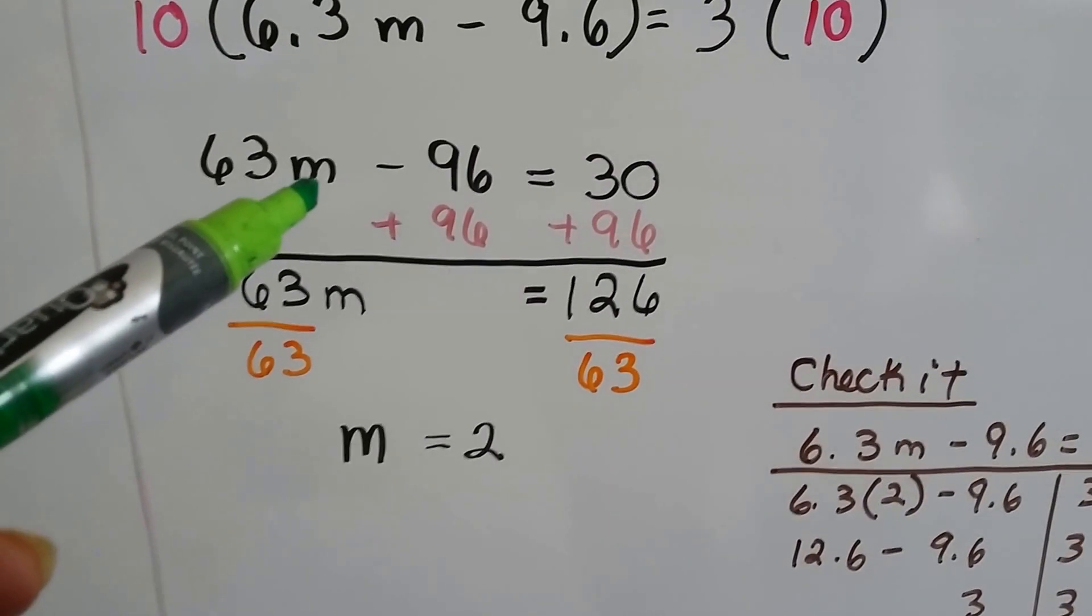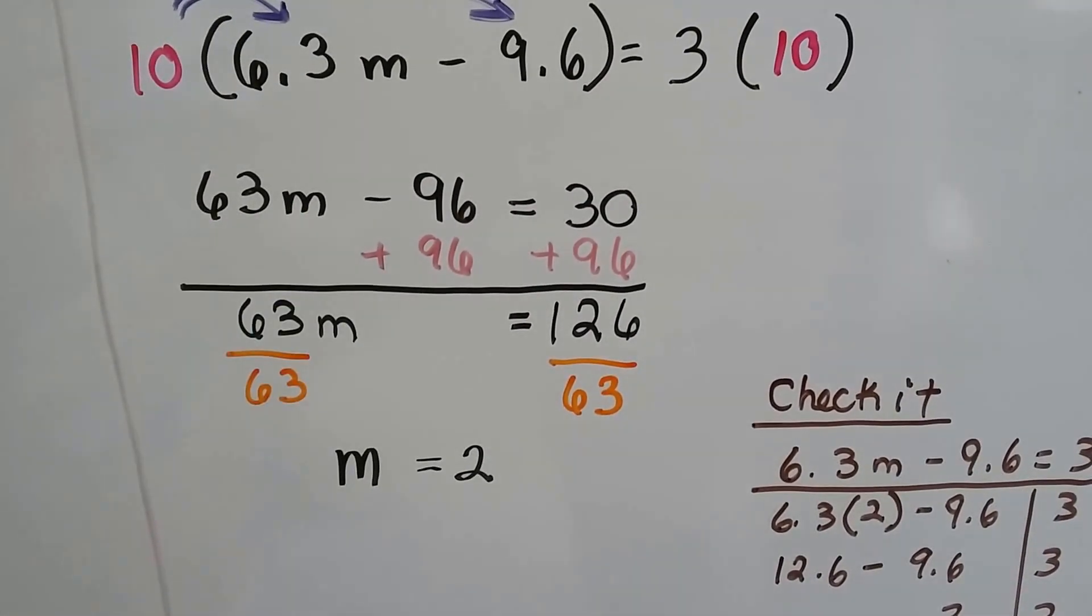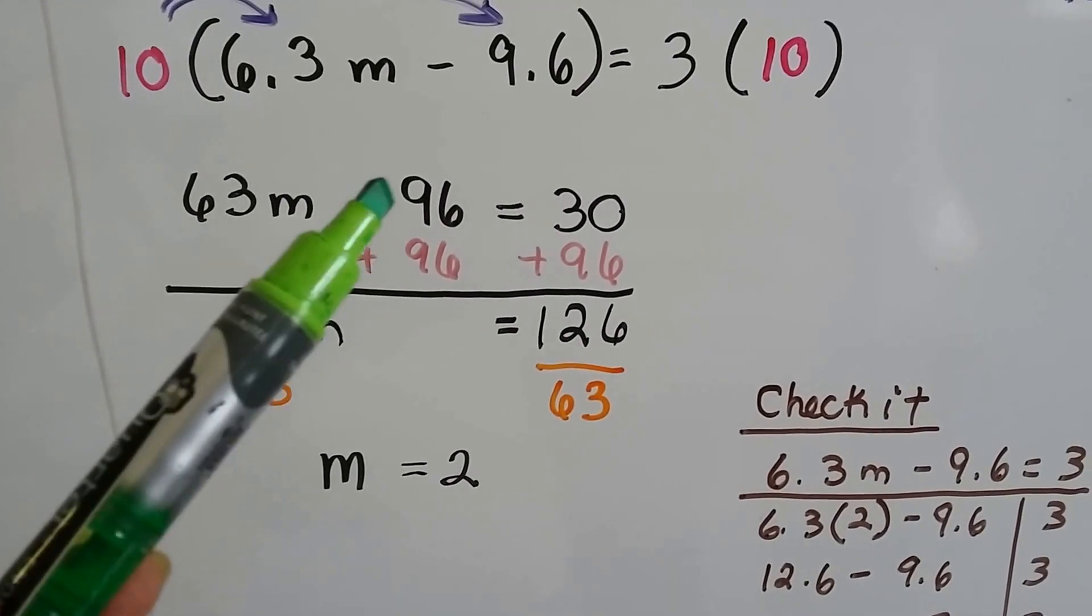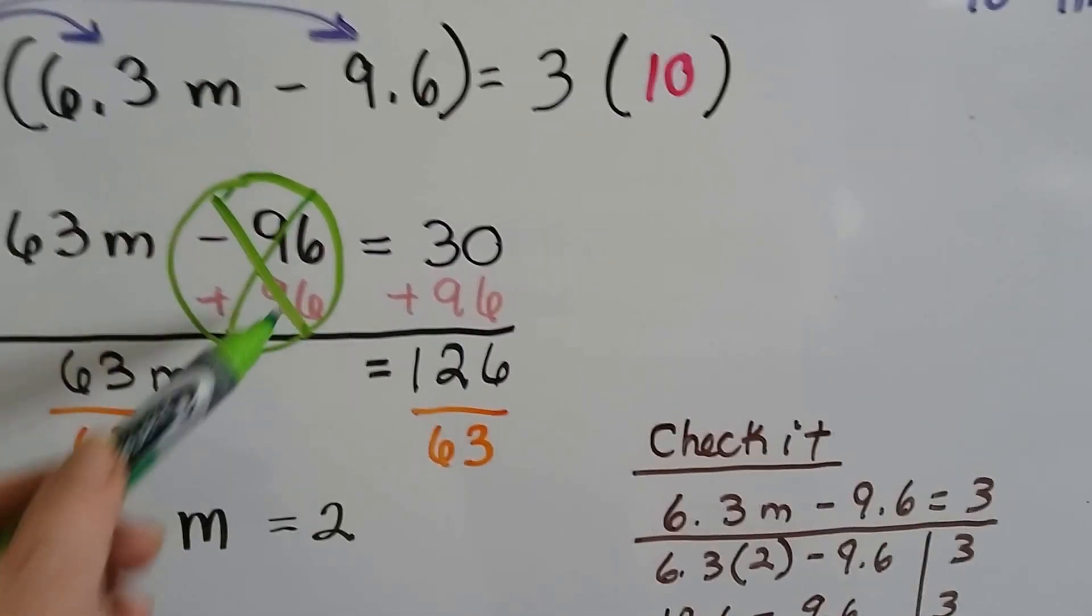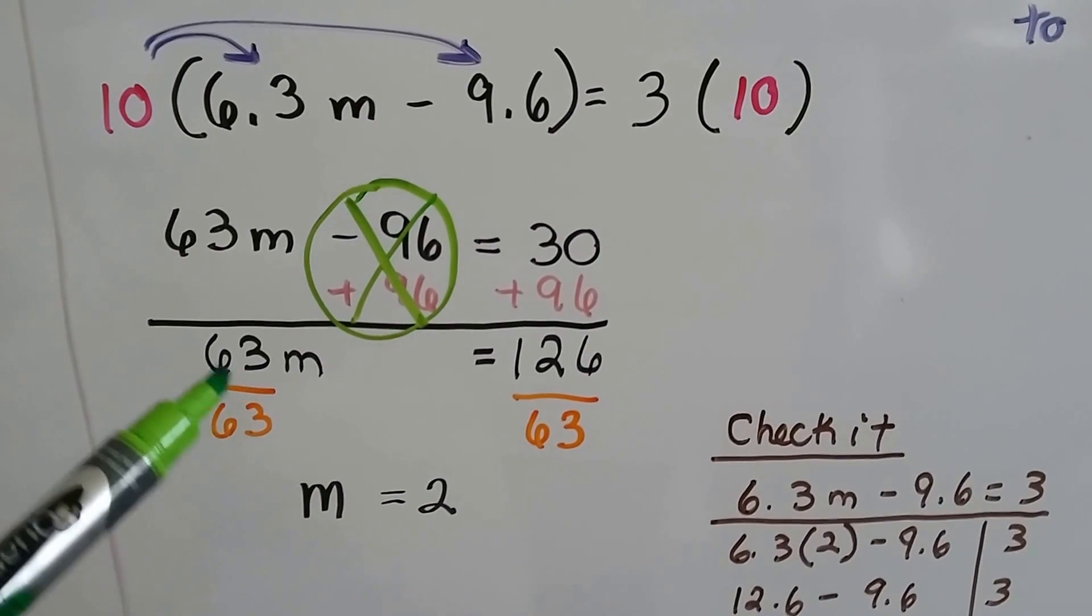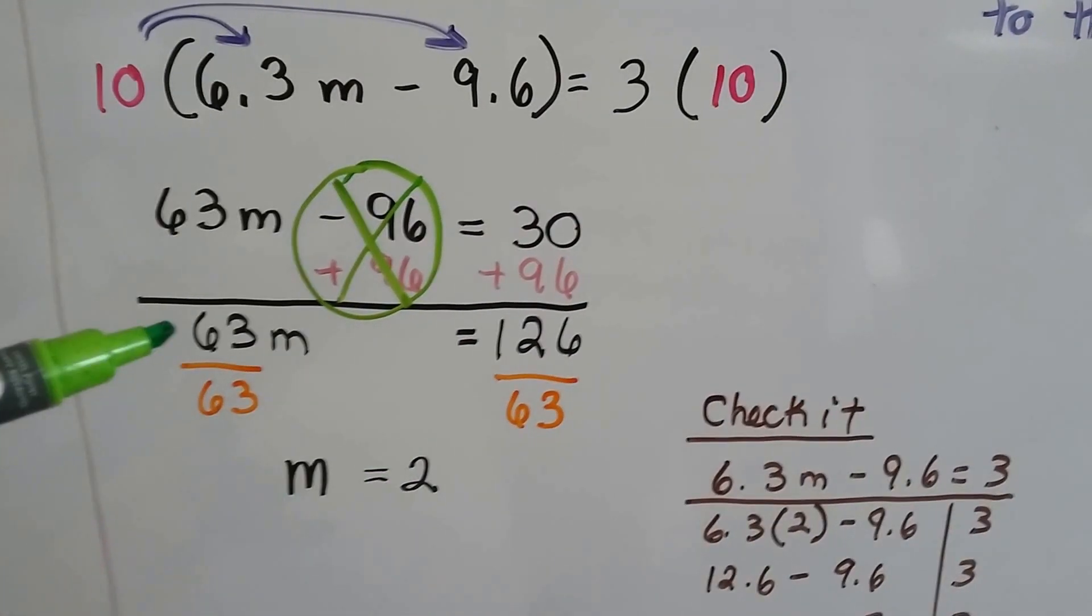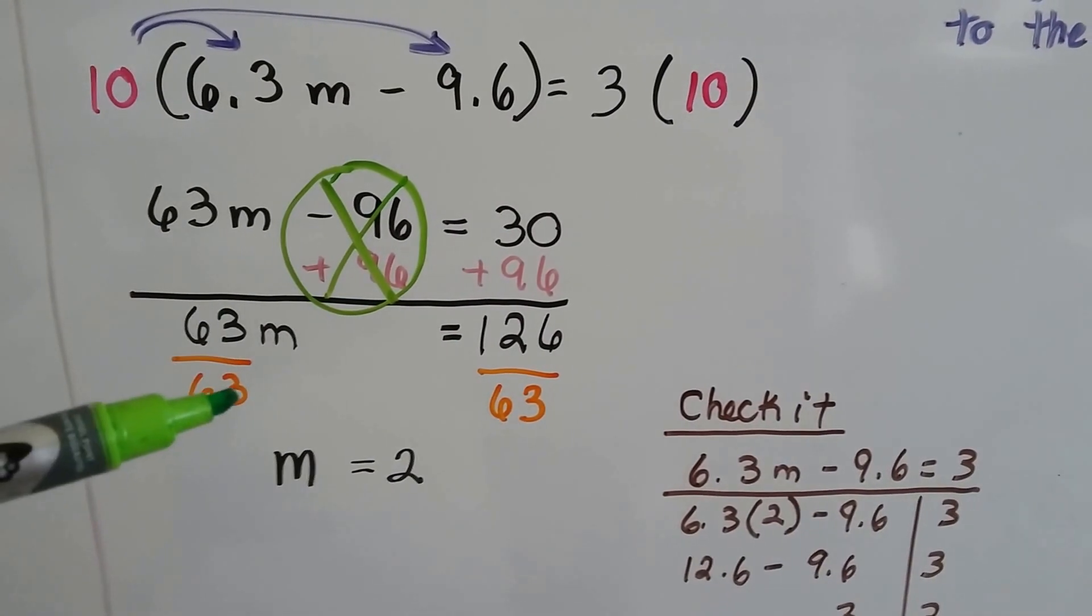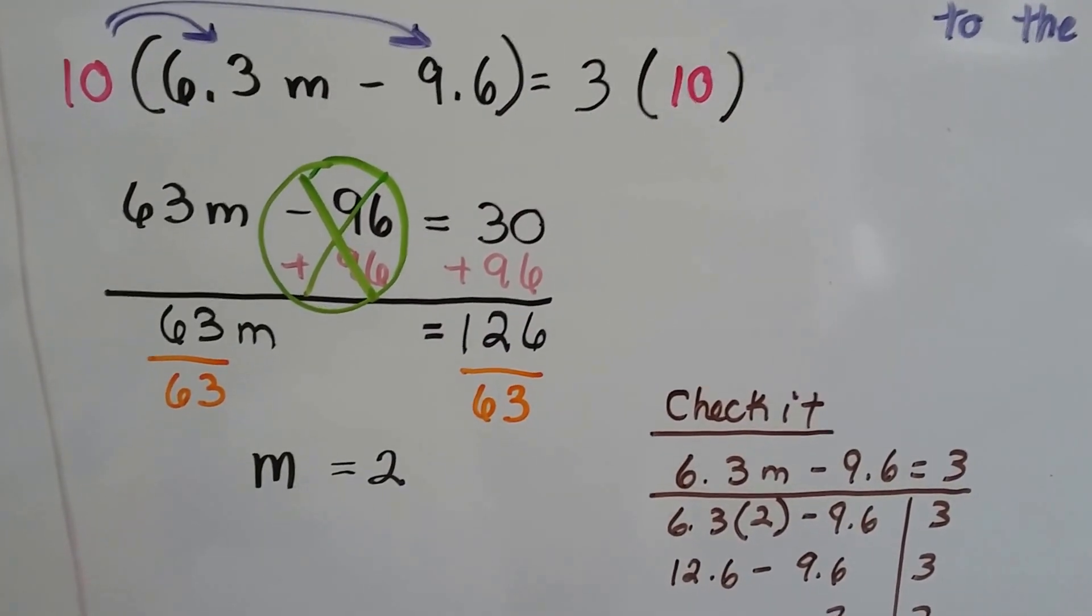We need to isolate this m to solve, to find out what m is. So we start getting rid of the terms on its side of the equation. So we're going to add 96 to create a zero pair here to do the opposite, make a zero. But then we have to add 96 to this side, so we have 126 on that side. 63m equals 126. We can divide both sides by this coefficient 63. That makes a 1, same numerator and denominator. We have m equals 2, because 63 can go into 126 two times.